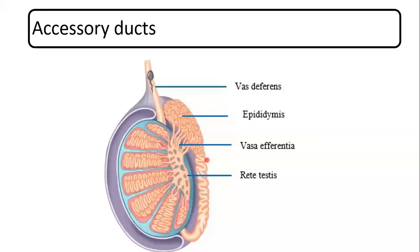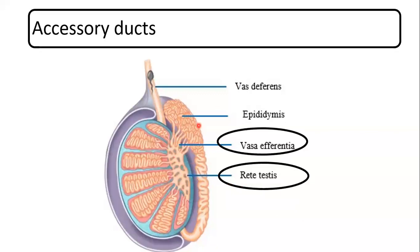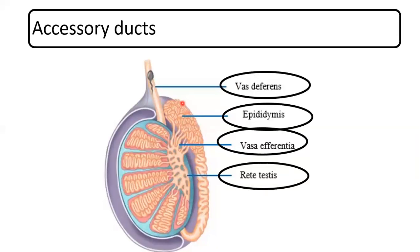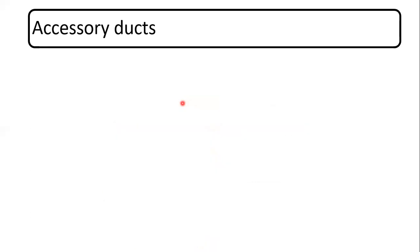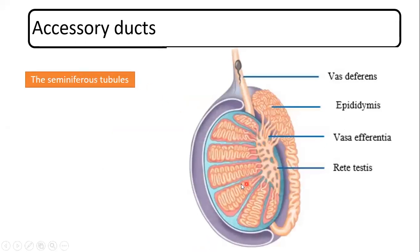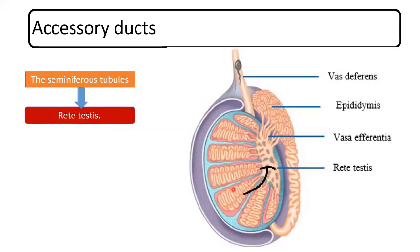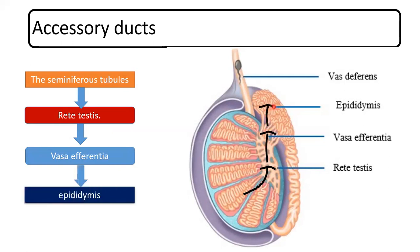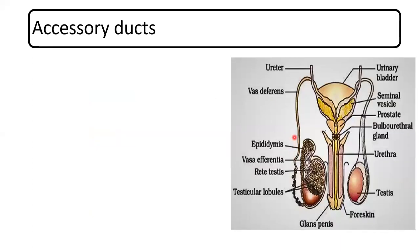Now, the male accessory ducts majorly contain four different structures: rete testis, vasa efferentia, epididymis, and vas deferens. The sperms produced in the seminiferous tubules travel from the seminiferous tubules to the rete testis, from the rete testis to the vasa efferentia, from the vasa efferentia to the epididymis, and finally to the vas deferens.